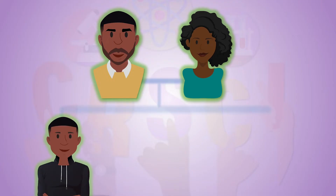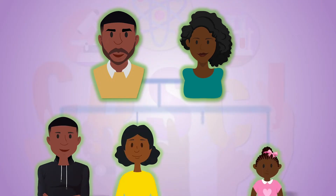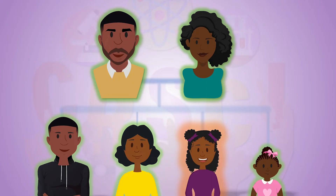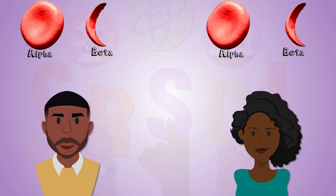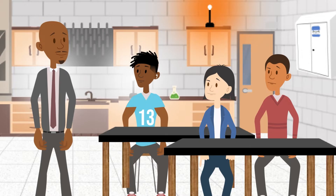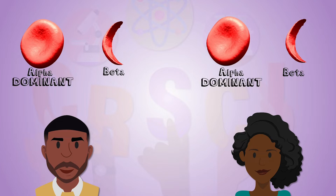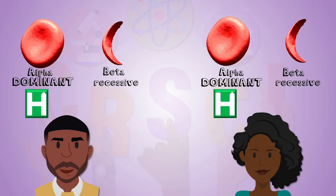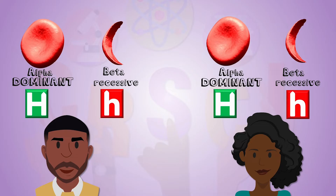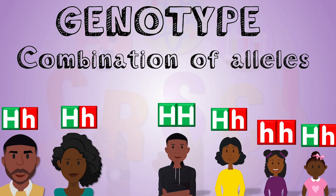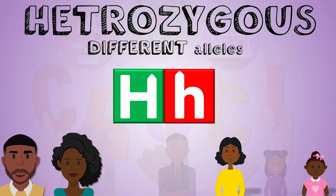Since your parents do not have sickle cell disease but they have a child with sickle cell disease, that lets me know that they carry both alleles. Alleles can be dominant or recessive. We symbolize them using capital letters for dominant alleles and lowercase for recessive alleles. We call this combination of alleles your genotype.